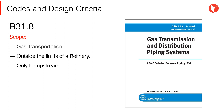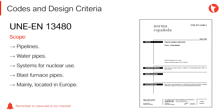The piping design code ASME B31-8 is applicable to gas transportation pipelines outside the limits of a refinery and only for upstream. The European equivalent to ASME B31-1 is the EN 13480 standard. It is a very broad code, covering different types of industrial plants and piping systems.